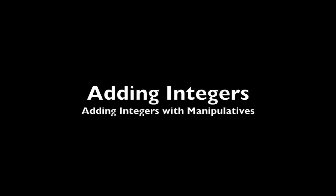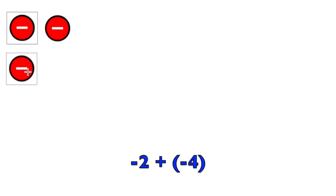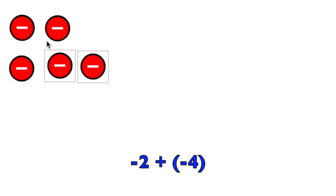Adding integers with manipulatives. Let's start with negative 2 plus negative 4. I'm going to model this with integer chips. Each one of these negative circles is going to count for negative 1. So I have 2 for negative 2 and 4 of them for negative 4.